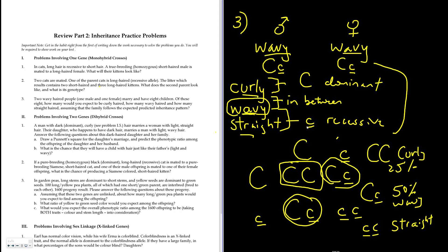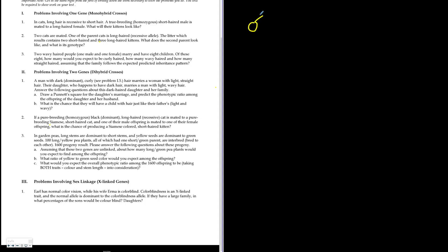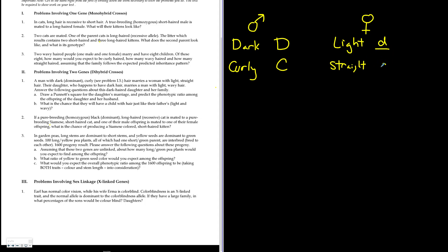Moving on to dihybrid cross questions involving two allele pairings. The first question: a man with dark dominant curly hair (genotype DDcc or similar) marries a woman with light recessive straight hair. We use uppercase D for dark and uppercase C for curly, lowercase d for light and lowercase c for straight hair.